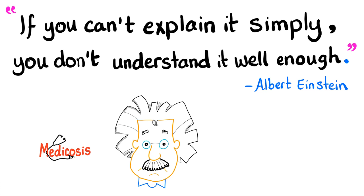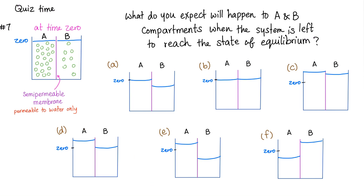If you can't explain it simply, you don't understand it well enough. Very well said. Let me answer the questions of the previous video. Here is zero time — what do you think equilibrium is going to be? If there are more solutes in column A than B, then water is going to shift from B to A. So B should decrease below the zero level and A should increase above the zero level. The correct answer here is E.